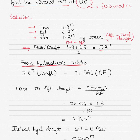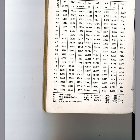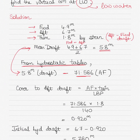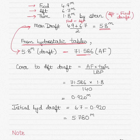Once we have the trim and mean draft, go into the hydrostatic tables. For a mean draft of 5.8 meters, find AF — the distance of the center of flotation from the aft perpendicular. From the tables, AF is 71.586. Then find the correction to apply to the aft draft to get the initial hydrostatic draft: AF multiplied by trim divided by the length between perpendiculars.